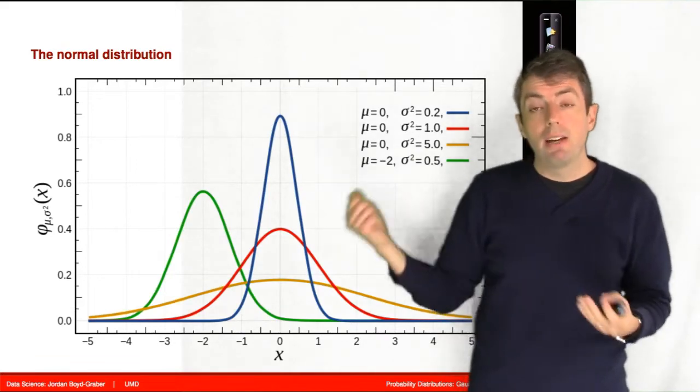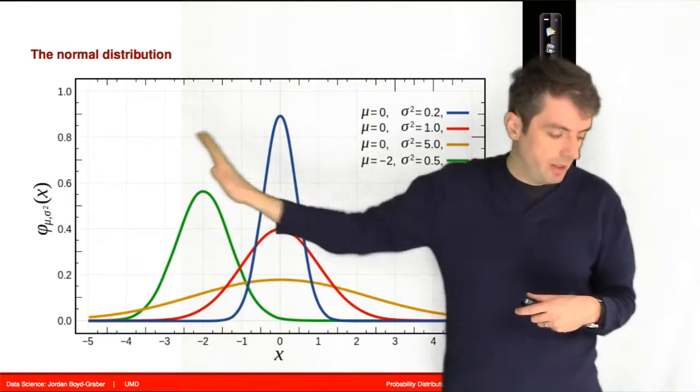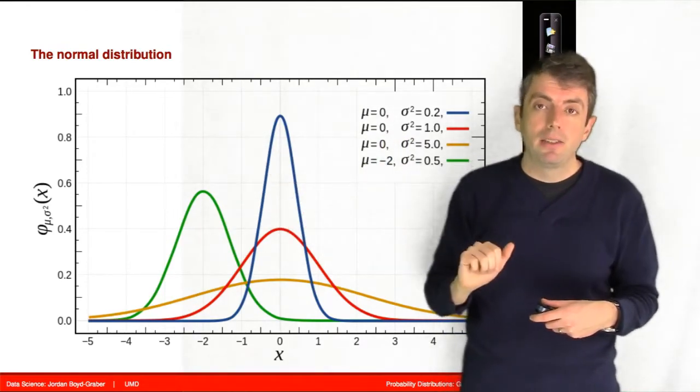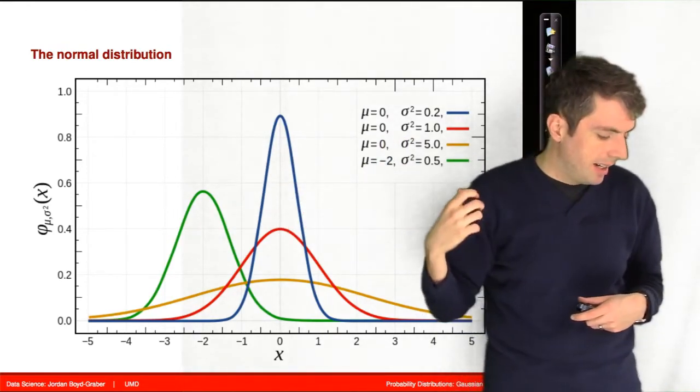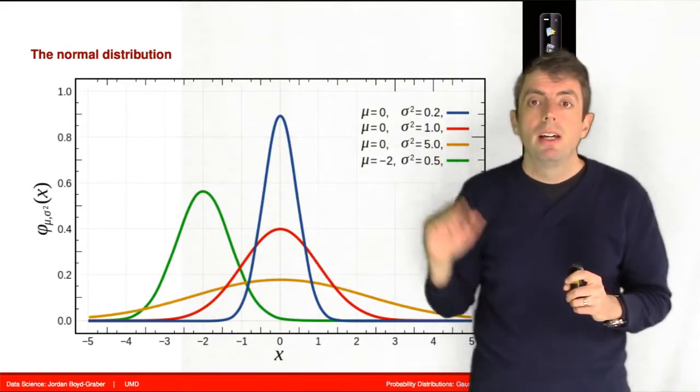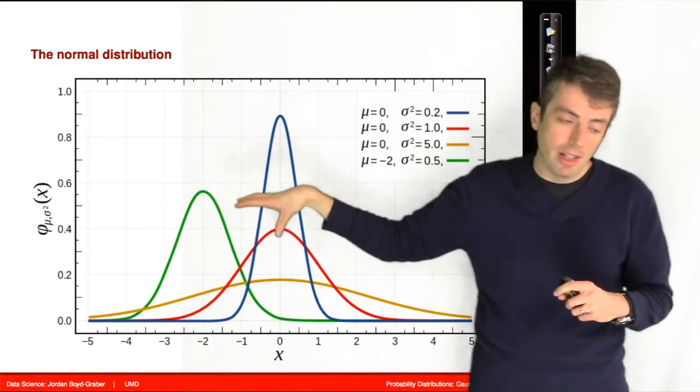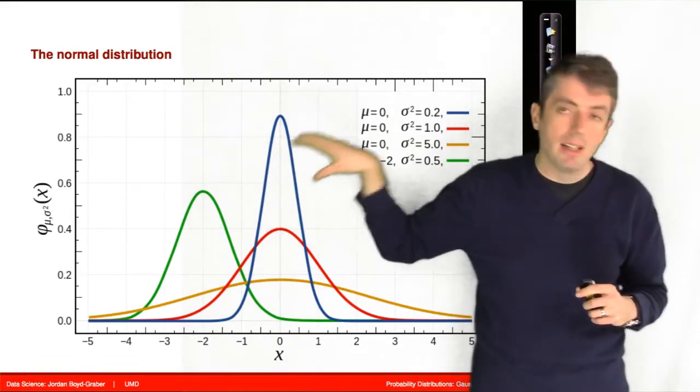And then you can have different means. For example, in green, you have a normal distribution that has shifted over considerably. So it still has a relatively tight variance, but the mean is shifted over. So you have now values concentrated around that mean of negative two.